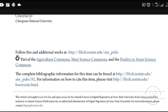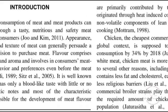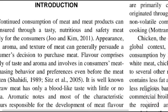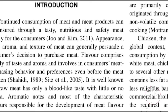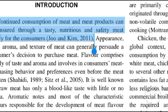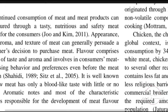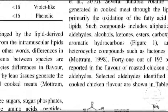Let's look at our first example. This journal uses the APA style of citation. As you can see in the introduction, the first statement is: 'Continued condition of meat and meat products can be ensured through tasty, nutritious and safe meat supply for the consumers.' The citation is Joe and Kim, 2011. I copy this statement and take it to my work — this is a citation cited by this journal. Then I go to look for the reference in the reference section.